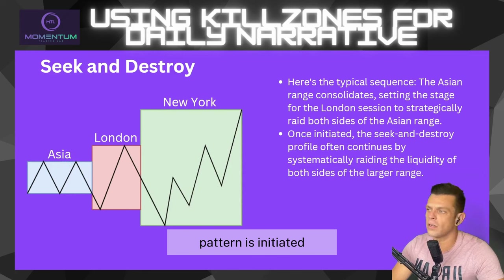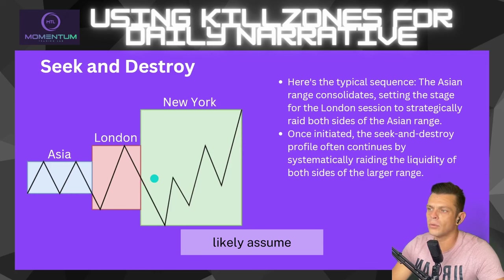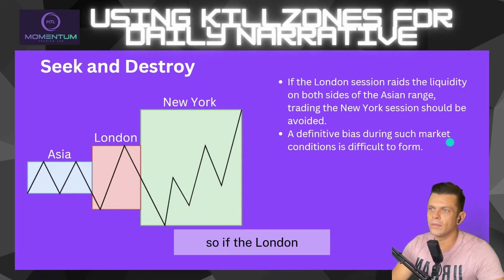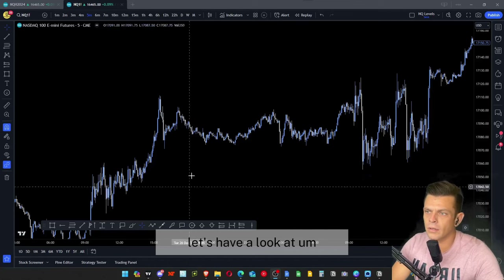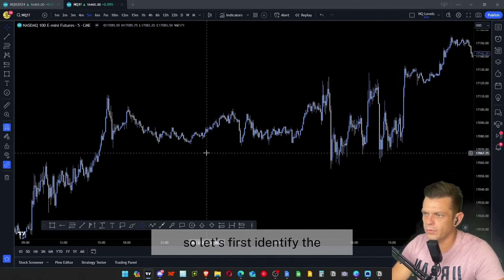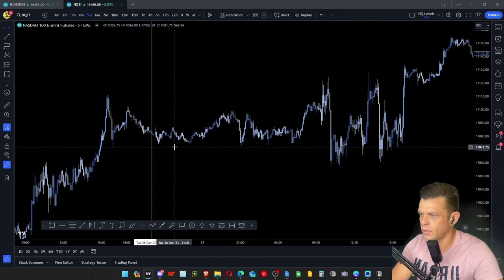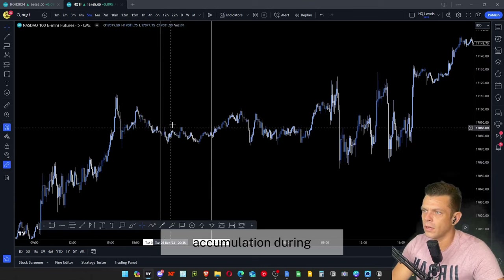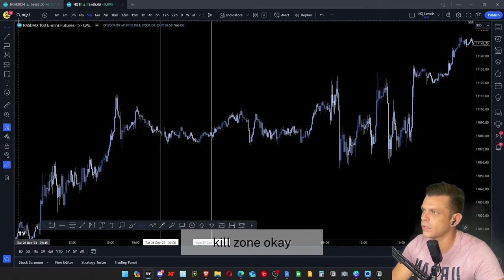Once you observe Asia consolidation followed by London raiding both sides of the Asia range, you can assume the larger Seek and Destroy pattern will play out during New York. Because determining a bias is difficult in these conditions, trading the New York session should be avoided. Let's identify the Asia session from 8 PM to midnight on the 5-minute chart — there's clear accumulation, so let's mark the highest high and lowest low of that kill zone.